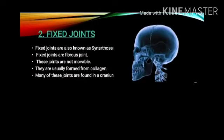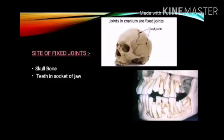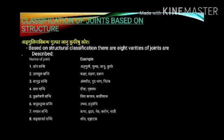Fixed joints are also known as synarthrosis. Fixed joints are fibrous joints. These joints are not movable. They are usually formed from collagen. Many of these joints are found in the cranium. They are present in the skull bone and teeth in the socket of a joint.